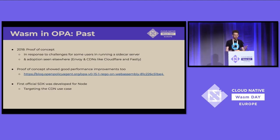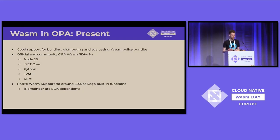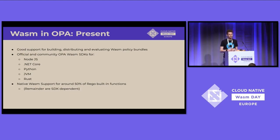That also triggered development of the first Node.js SDK for OPA Wasm modules. At the moment, we have Wasm support available and ready for people to use in OPA today. We also have a range of SDKs for specific languages. I've made use of the Python SDK, which is a community-developed OPA Wasm evaluation module, and the Node.js one, which is officially implemented. We have good support — depending on whether you have a glass-half-empty or half-full view — for the range of Rego built-in functions.